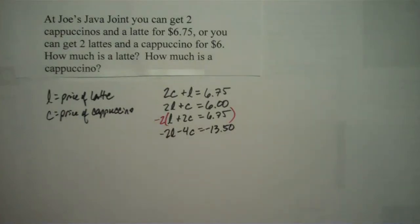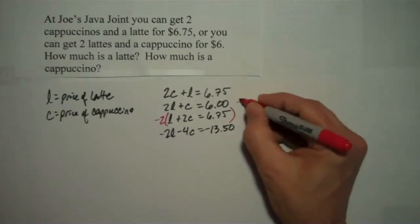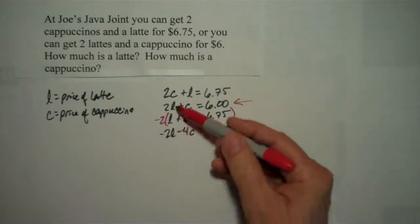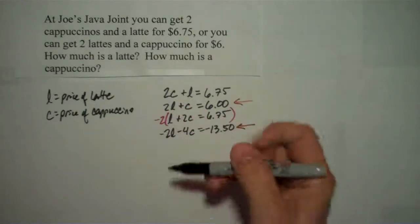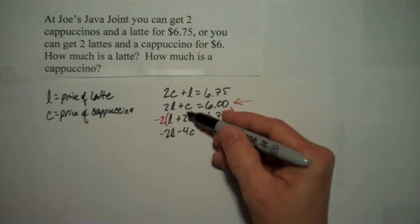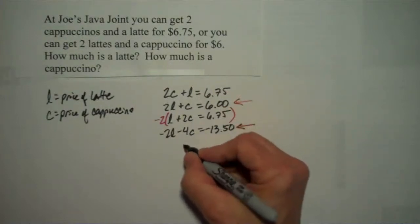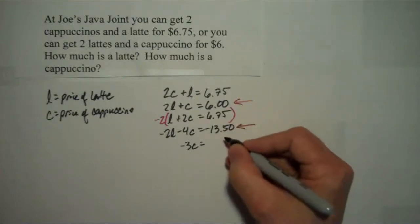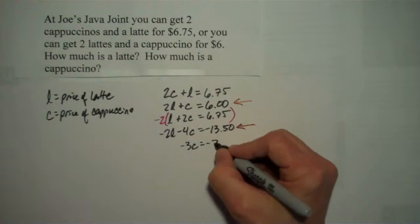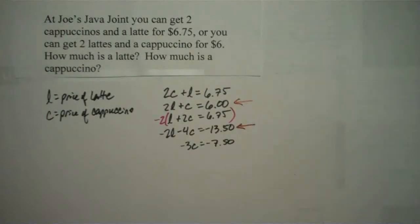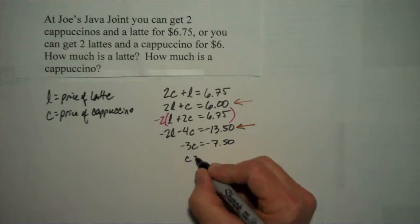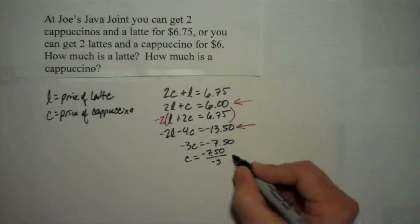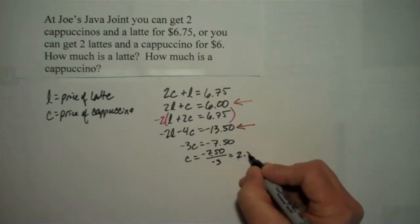Okay, so now what do we have? We have this equation here and this equation here that we're going to combine. So 2L minus 2L gets me 0. C minus 4C gets me negative 3C. And 6 minus 13.50 gets me negative 7.50. And all of a sudden this has gotten real simple. C equals negative 7.50 over negative 3, and that's just 2.50.